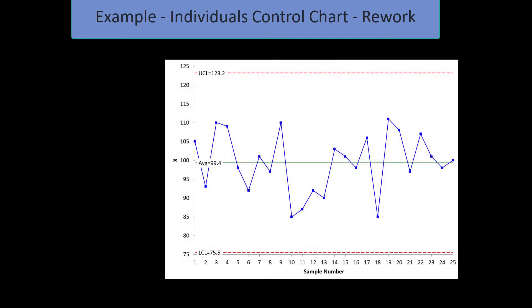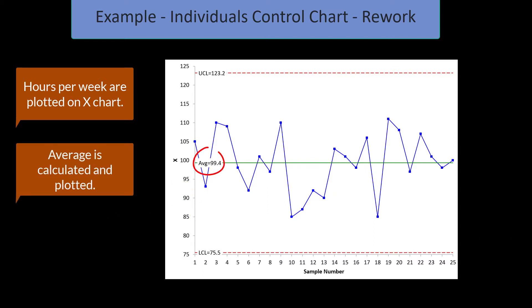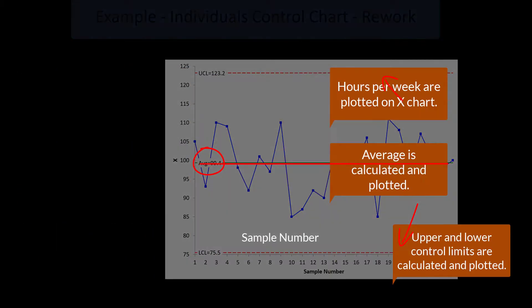Let's take a look at an example here with rework, and this is a department that's been tracking their rework over time. They figure out how many hours per week they do in rework. They're going to plot the results on the X chart. The first week was 105 hours, the second week is 93 hours. And they continue to do this over time, and once they have enough data, they can calculate the average. It's 99.4, almost 100 hours. Then they can calculate the upper and lower control limits and then you're ready to interpret the chart.